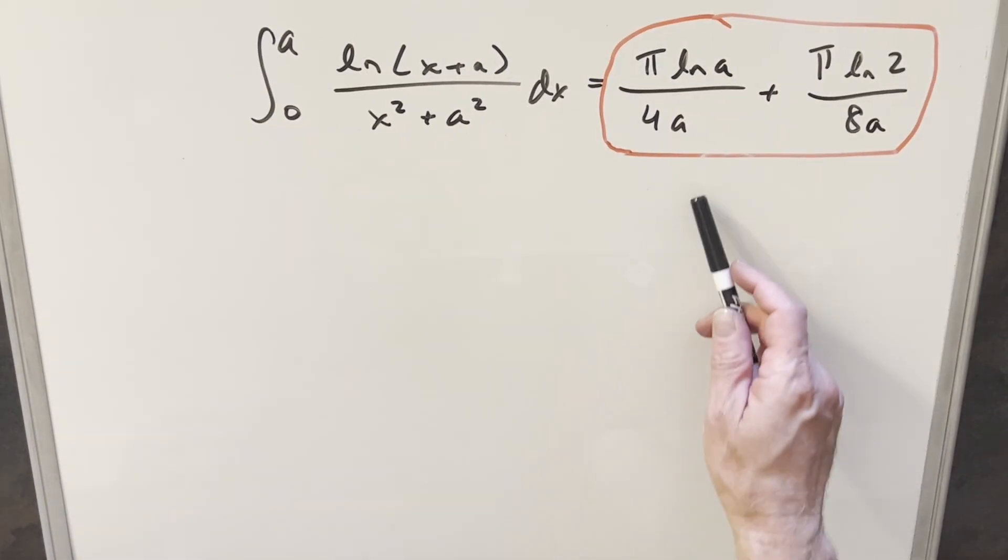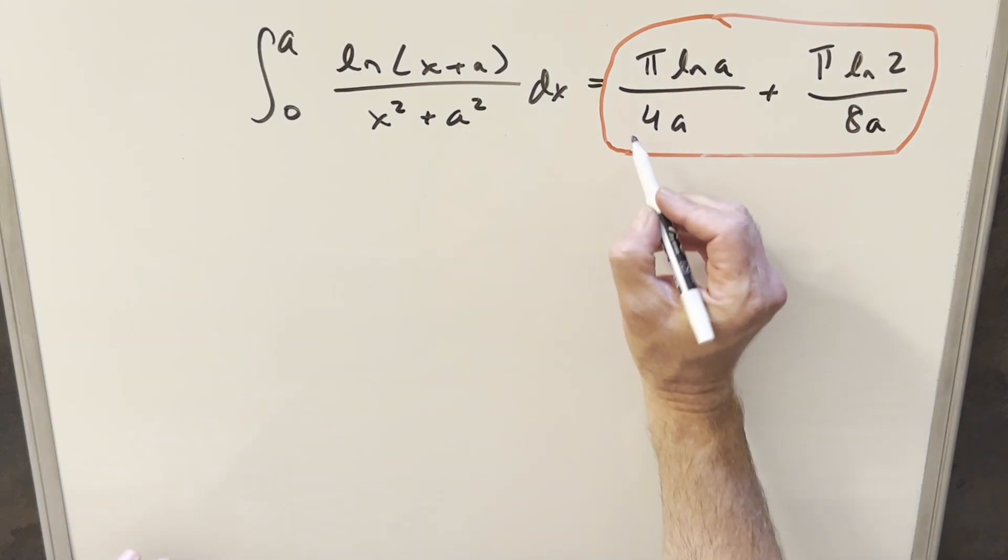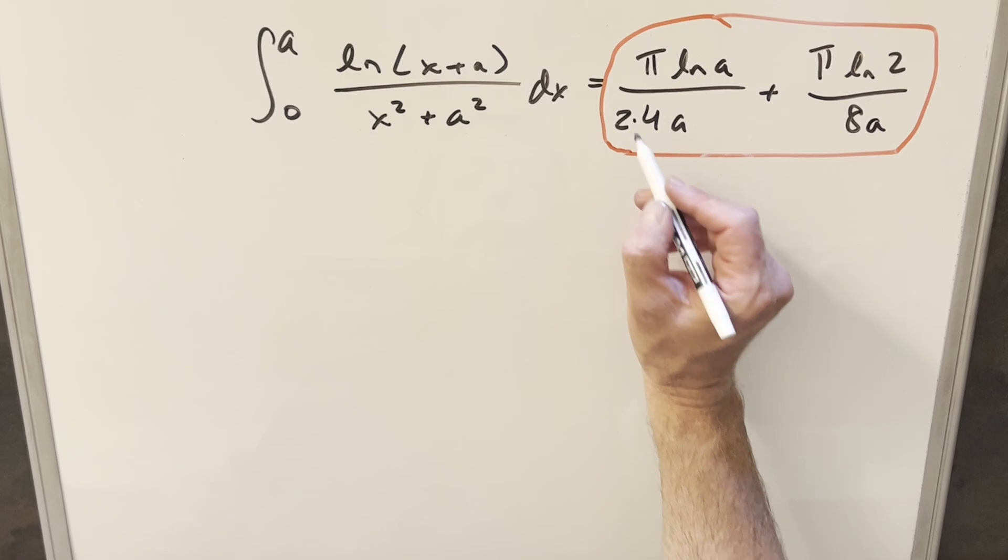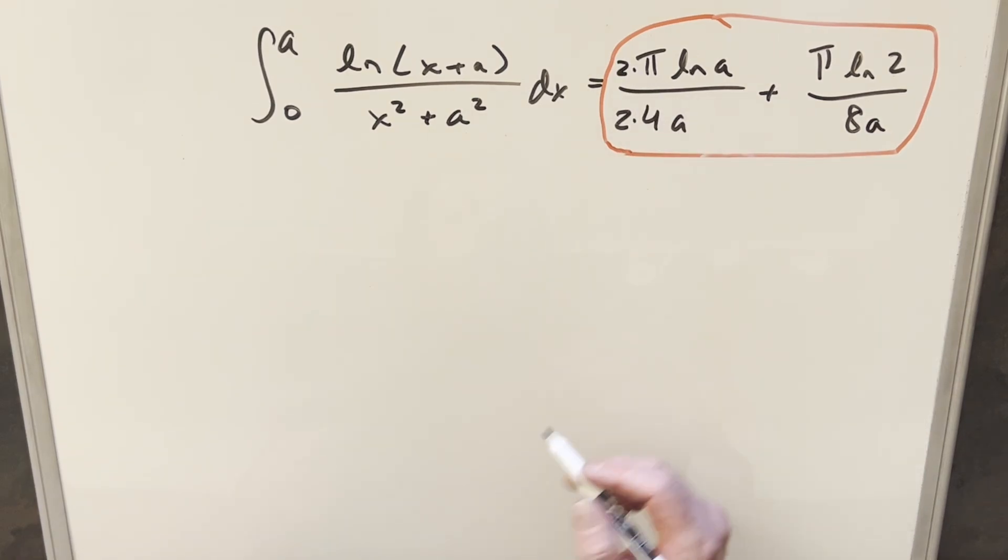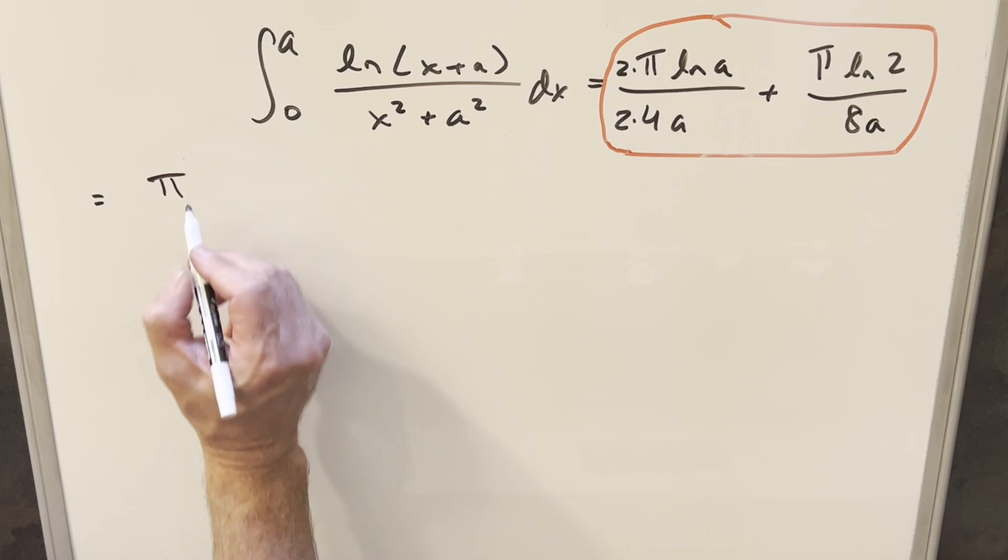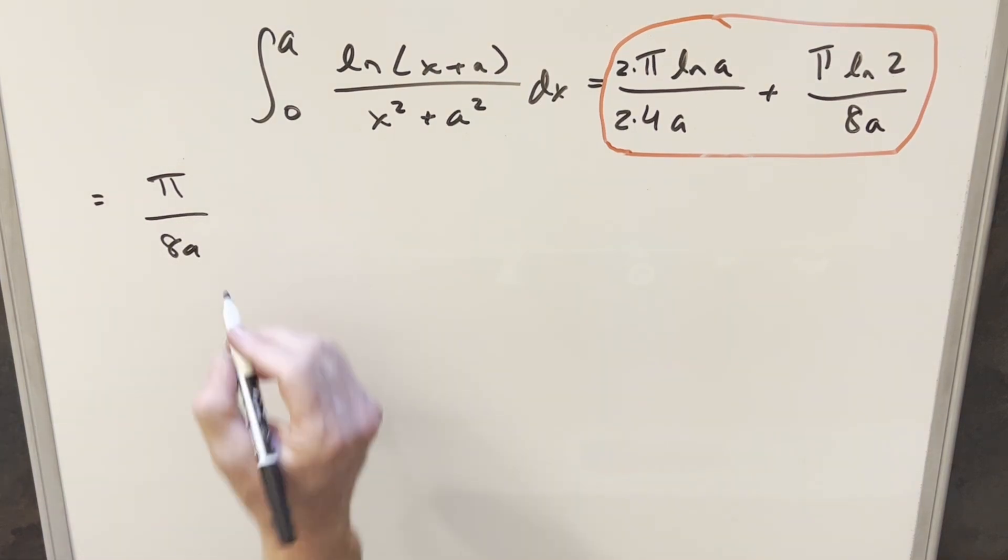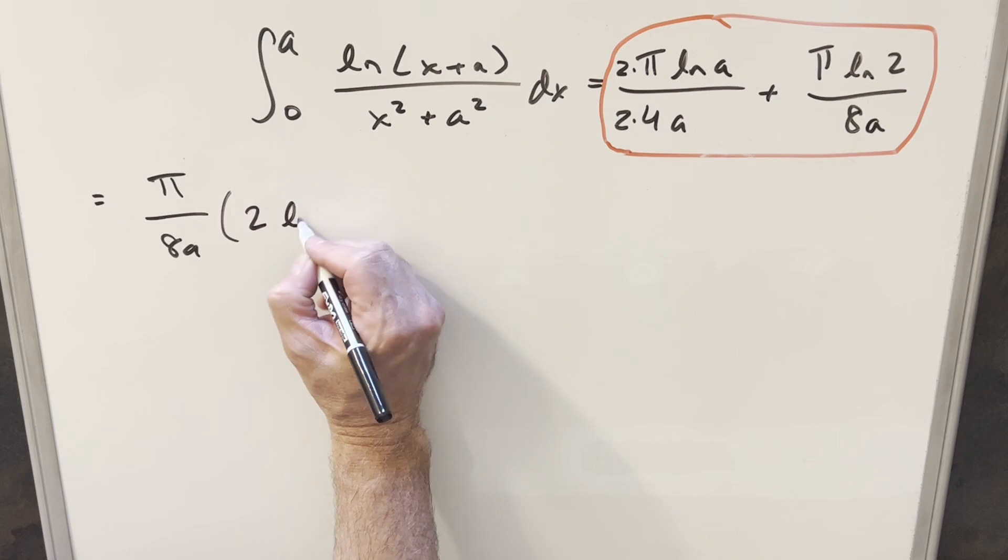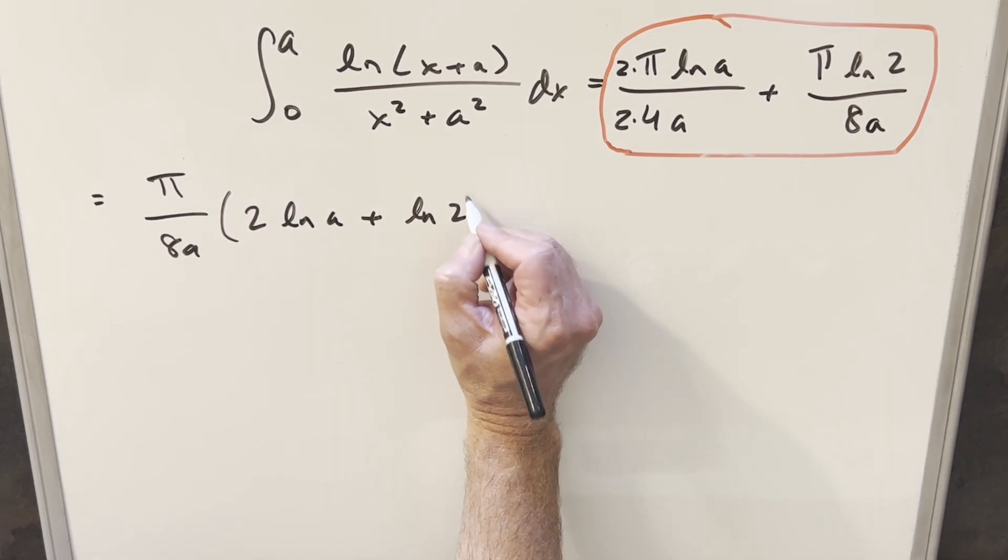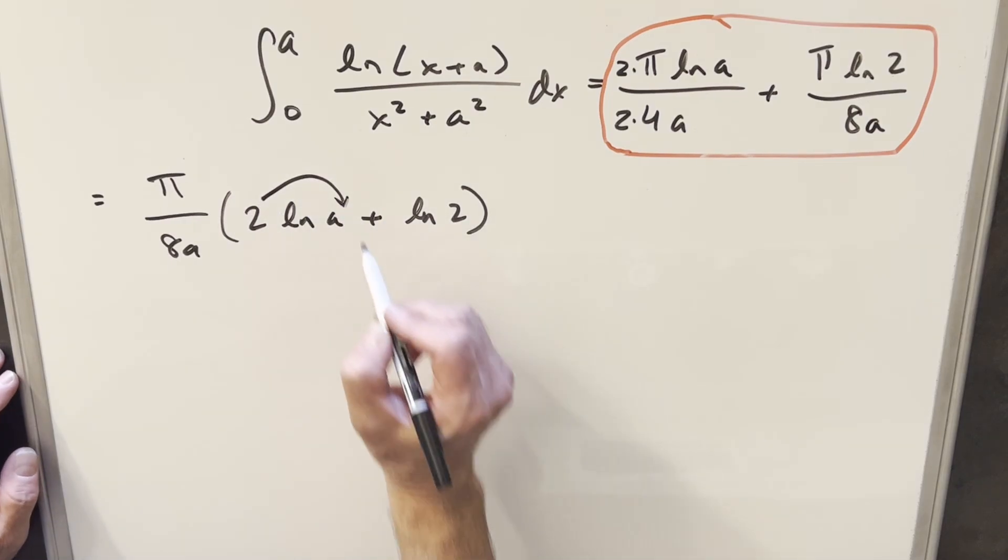Okay, now in order to finish it off, all that's left is we just need to combine these two fractions together. One thing I want to do is let's get a common denominator in order to get 8A in both of these fractions. Let me multiply by 2 here, multiply by 2 here. Then what I'm going to do is come over here and let's factor out pi over 8A, because we have that in common in both. Then what's left is going to be in the first one, 2 ln A, plus in the second one, just ln 2.